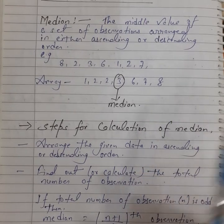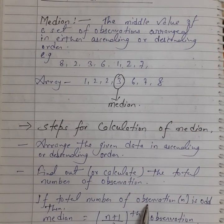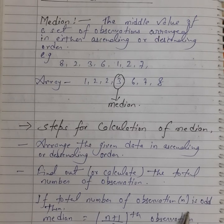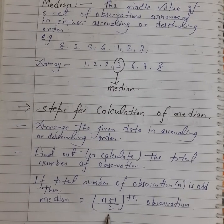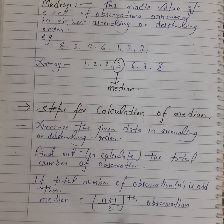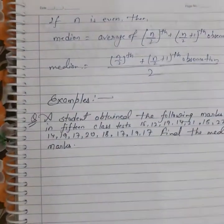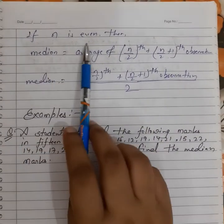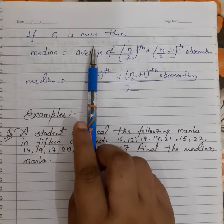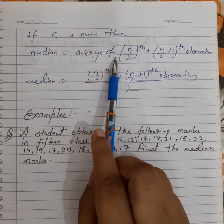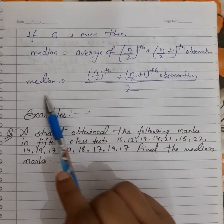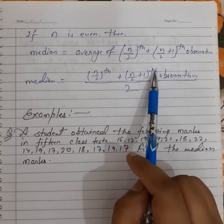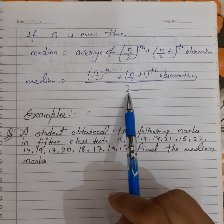Now, if the total number of observations n is odd, then median is equal to the (n+1)/2 th observation. If the number of observations is even, then median is equal to the average of the (n/2)th and the (n/2 + 1)th observations.